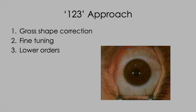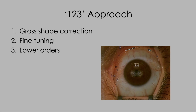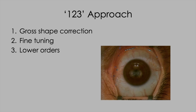The 1-2-3 approach is: gross shape correction to bring the cornea within range for fine tuning with therapeutic laser procedures, and then having established good vision in spectacles, you can go on with that or indeed further laser treatment or ICL implantation to correct the sphere and the cylinder.